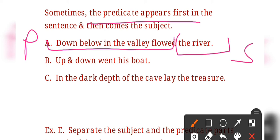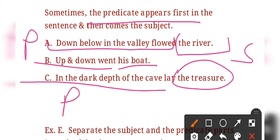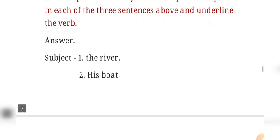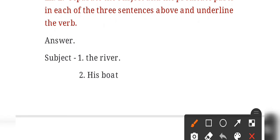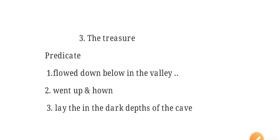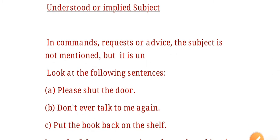Another example: 'Up and down went his boat' — 'his boat' is the subject and 'up and down went' is the predicate. And 'In the dark depth of the cave lay the treasure' — 'the treasure' is the subject and everything else is the predicate. Exercise E asks you to separate the subject and predicate in each of these three sentences.